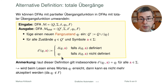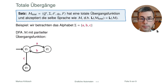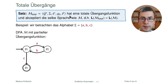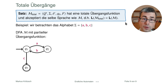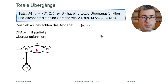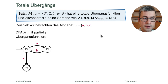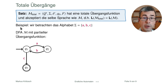Damit gilt: Der neue Automat M' hat eine totale Übergangsfunktion, und er akzeptiert dieselbe Sprache wie M, also L(M') = L(M). Es hat sich an der Sprache nichts geändert. Der Fangzustand dient lediglich dazu, die undefinierten Fälle abzudecken. Wird er einmal erreicht, führt er nie mehr zu einem akzeptierenden Zustand, da er selbst kein Endzustand ist.